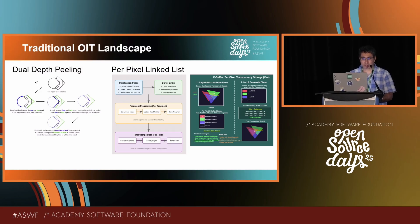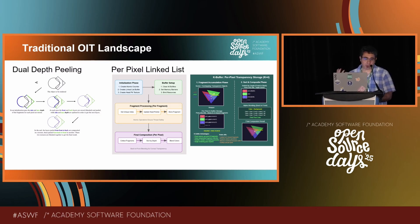Another approach is called per-pixel linked list. The idea is to maintain a linked list on the GPU in the fragment shader, storing the color and depth data of every fragment coming in for a given pixel. In a final composite pass, you sort this linked list by depth and merge it. This produces the correct result, but you can't use infinite memory. Most applications allocate a fixed number K of elements per pixel. Any fragments beyond K are either discarded or handled with tail blending, which blends them with the last fragment — but results can be wrong in that case.